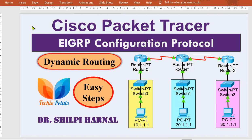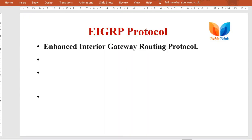Hello friends, after RIP and OSPF dynamic routing protocols, in this video we are going to configure the network with the help of an advanced dynamic routing protocol that is EIGRP. It was initially developed by Cisco to be used with Cisco routers, but later it was declared open source to be used with all other routers. It stands for Enhanced Interior Gateway Routing Protocol.